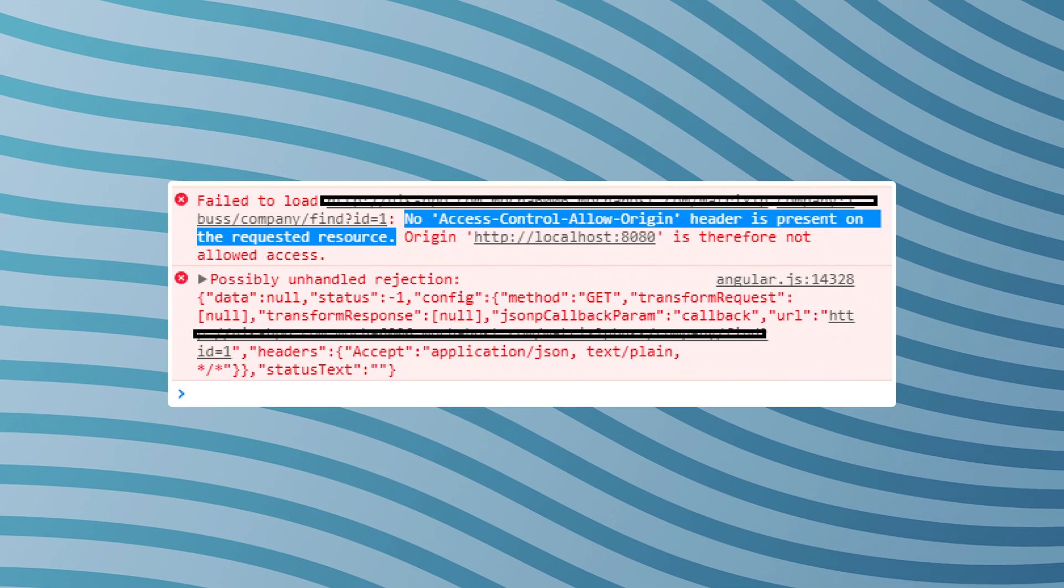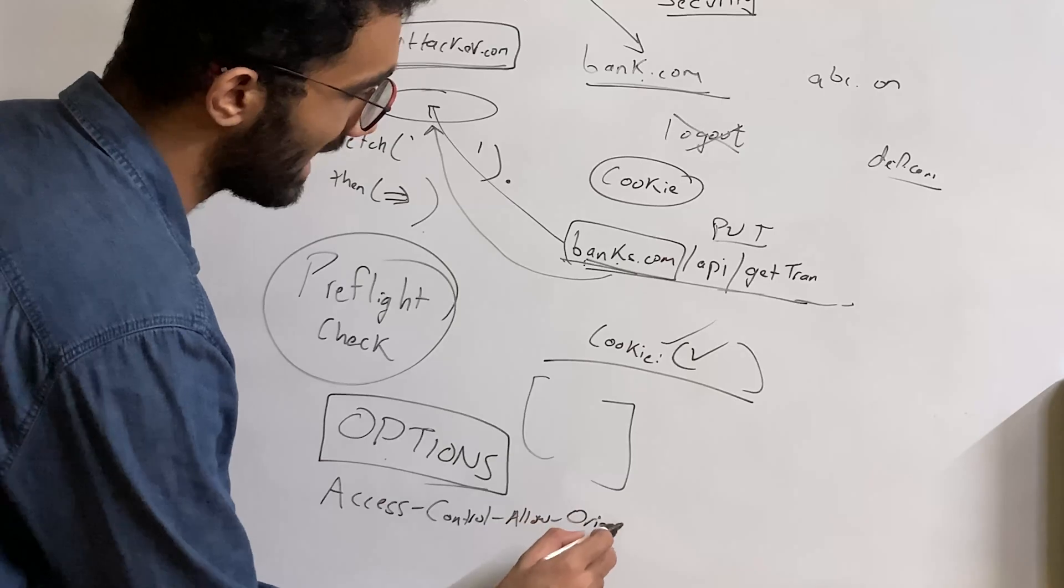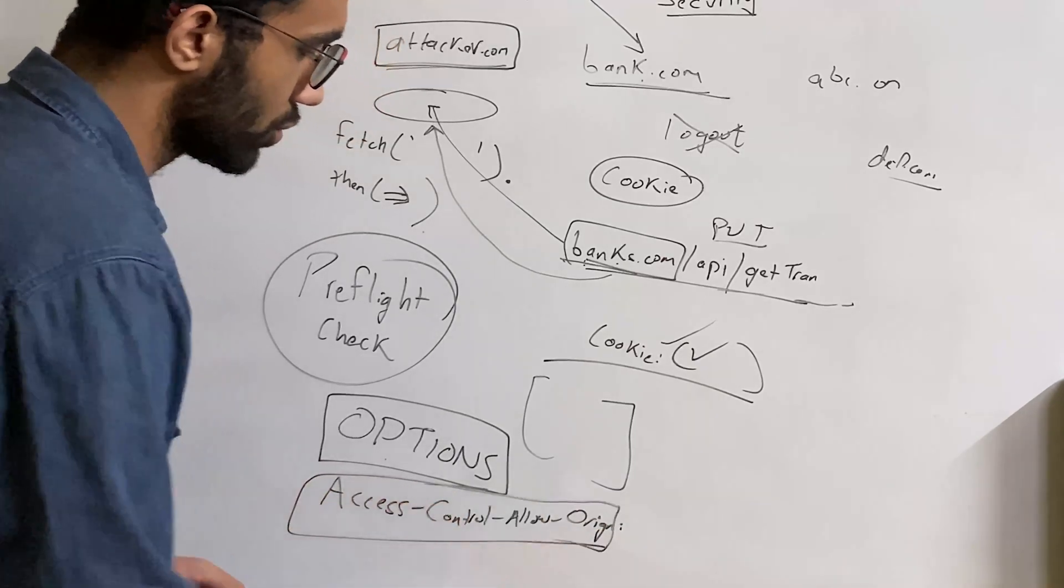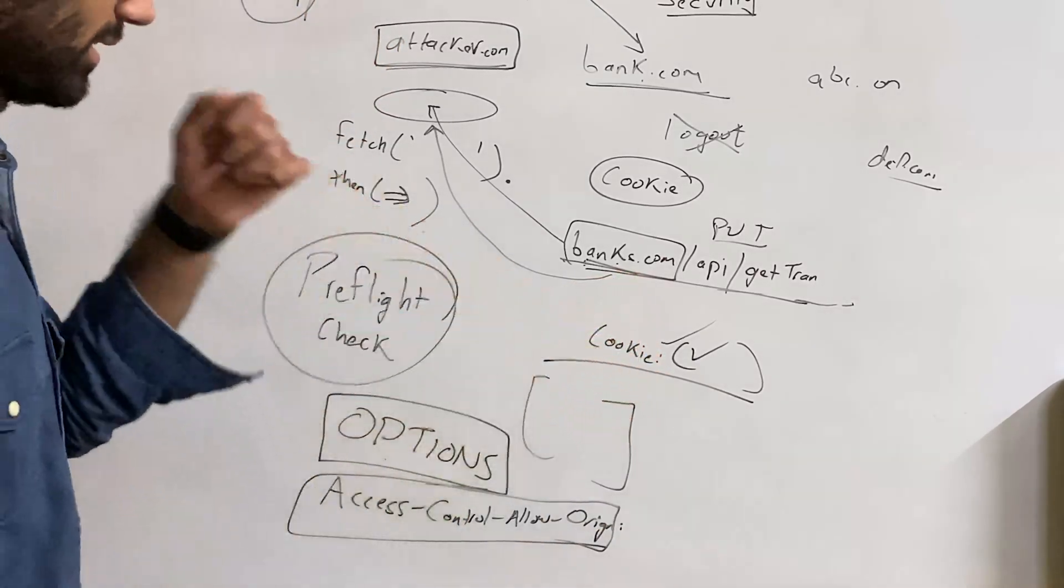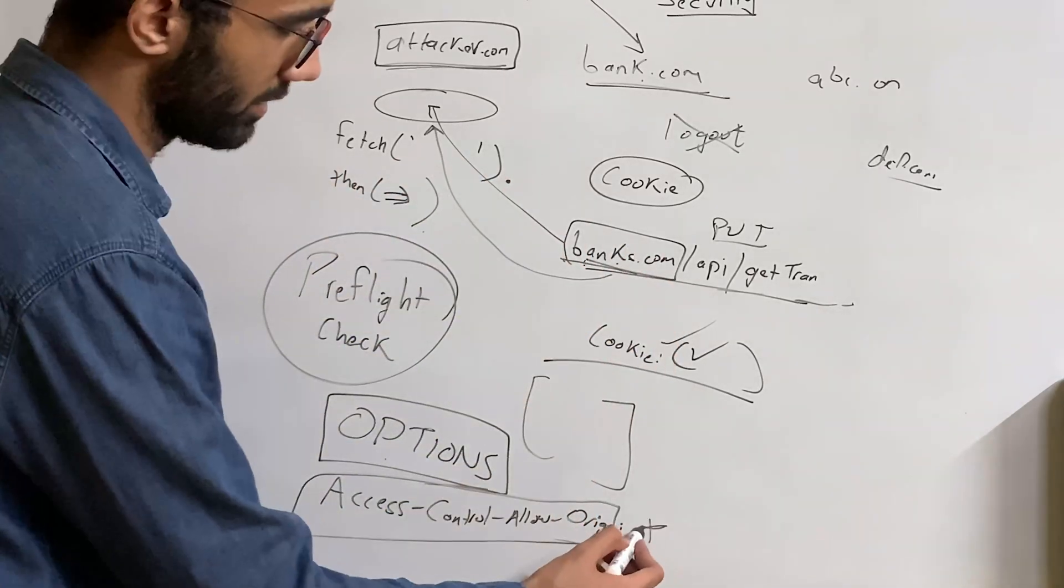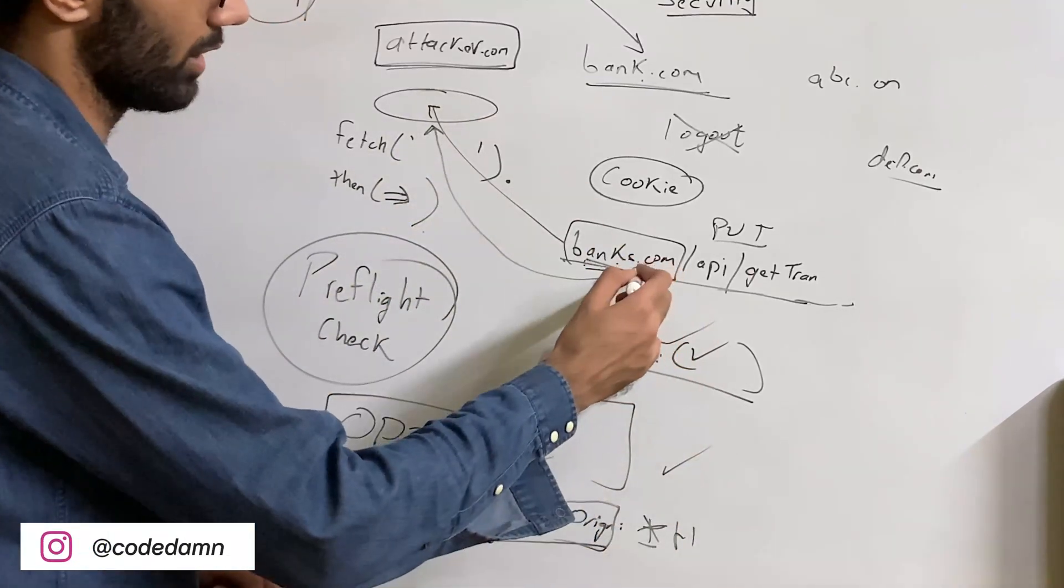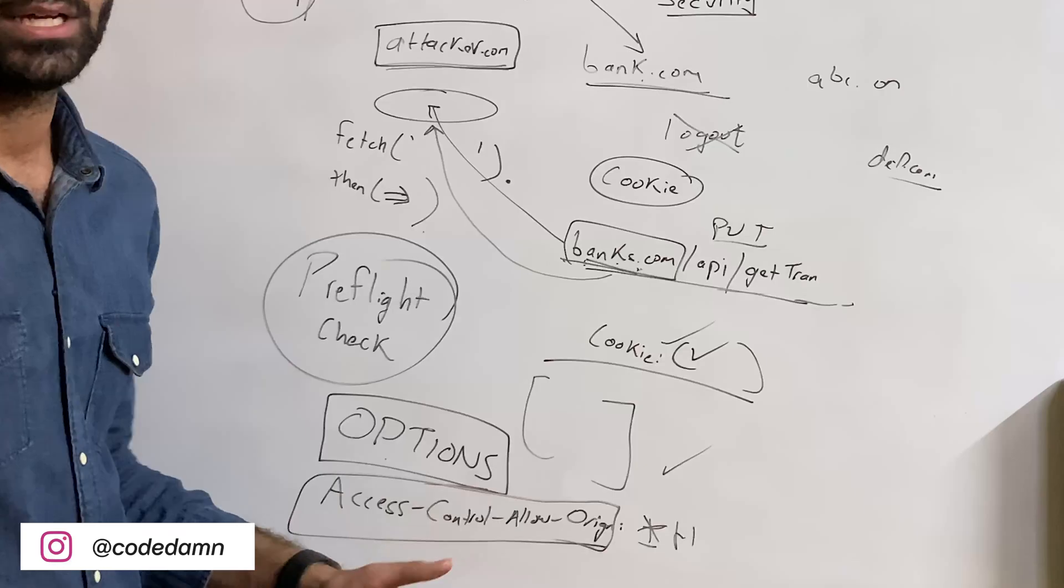You would have also heard about a header called access-control-allow-origin. So this header right here actually instructs browser: should this website which is performing this request should this be allowed to even request this resource or not? If it returns a star or the HTTP attacker.com, then browser makes the actual request, which is the API one. Otherwise browser blocks it.